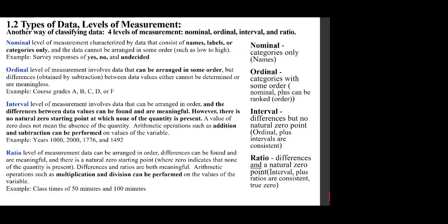Interval level of measurement: data can be arranged in order and differences between values can be found and are meaningful, but there is no natural zero starting point — a value of zero does not mean the absence of the quantity. Arithmetic operations such as addition and subtraction can be performed. Example: years 1000, 2000, 1776, and 1492. Ratio level of measurement: data can be arranged in order, differences are meaningful, and there is a natural zero starting point where zero indicates none of the quantity is present. Differences and ratios are both meaningful; multiplication and division can be performed. Example: class times of 50 minutes and 100 minutes.